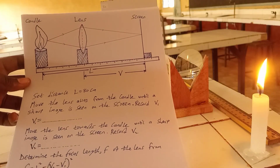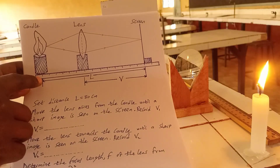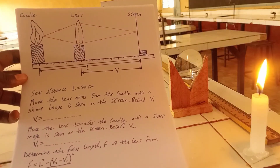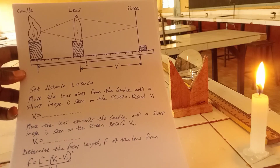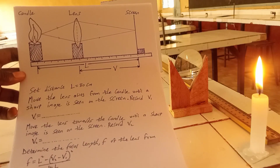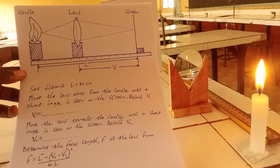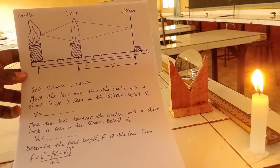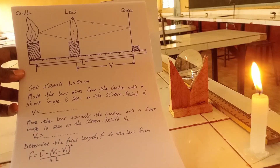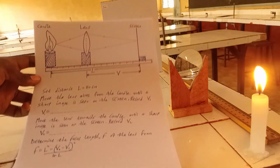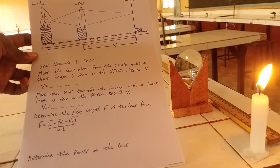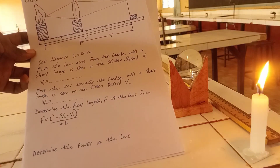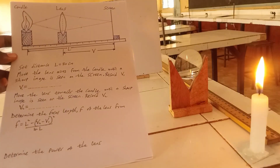We are taught to set distance L from the candle to the screen, with distance L being 80. From there we will move the lens away until we obtain a sharp image, then also move the lens towards the screen and obtain another sharp image. We are also required to find the focal length from a given equation, and also the power of the lens.